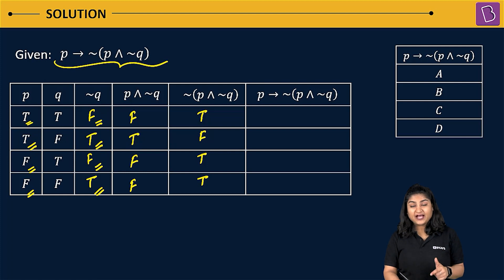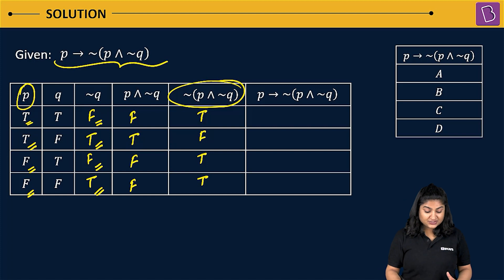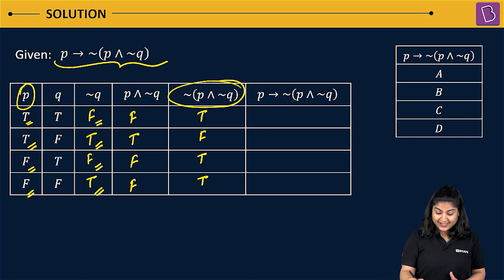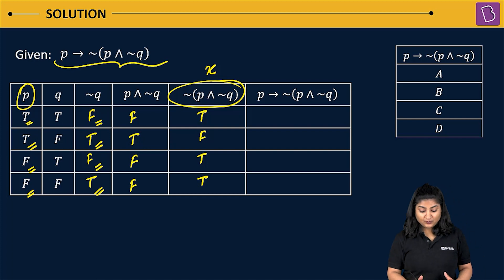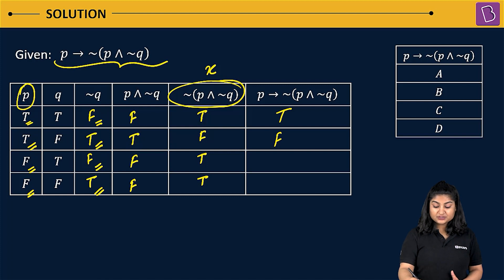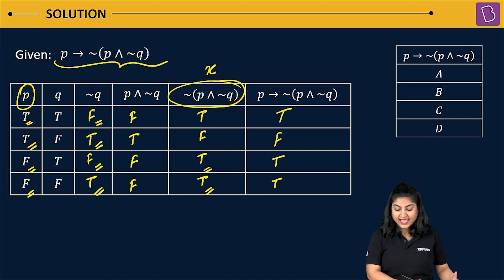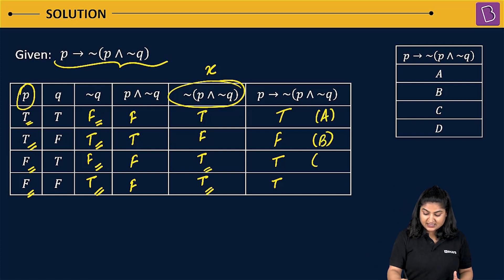Now we find the truth values of P implies negation of (P and negation Q), calling it X. When P is true and X is true, implication is true. When P is true and X is false, implication is false. When P is false and X is true, implication is true. When P is false and X is true, implication is true again. So A, B, C, D are true, false, true, true respectively.